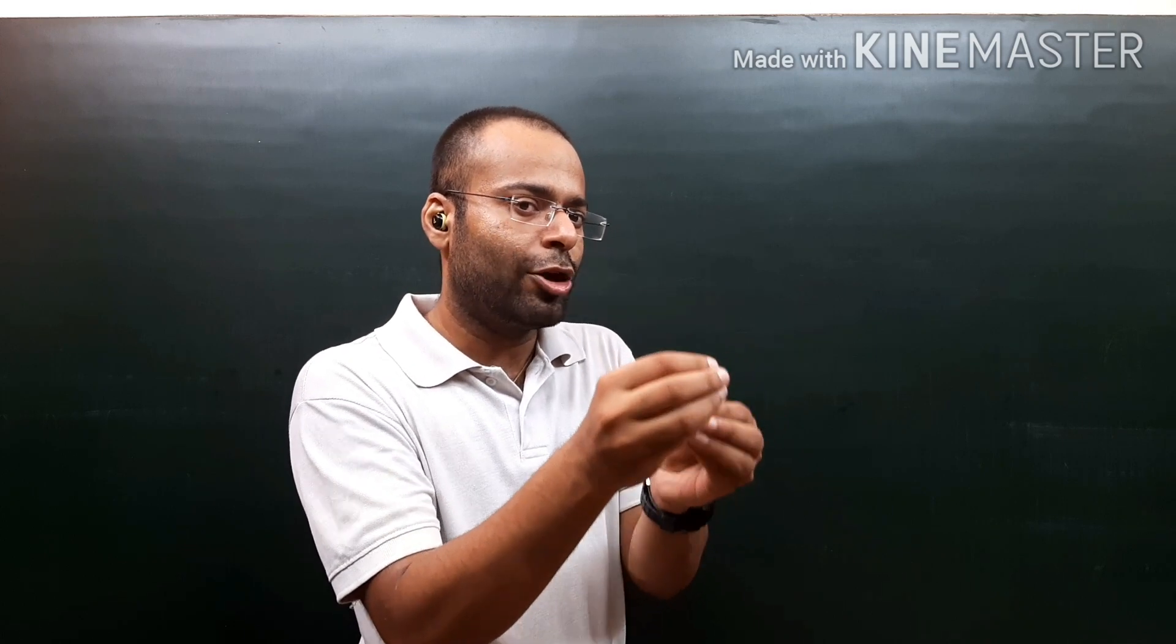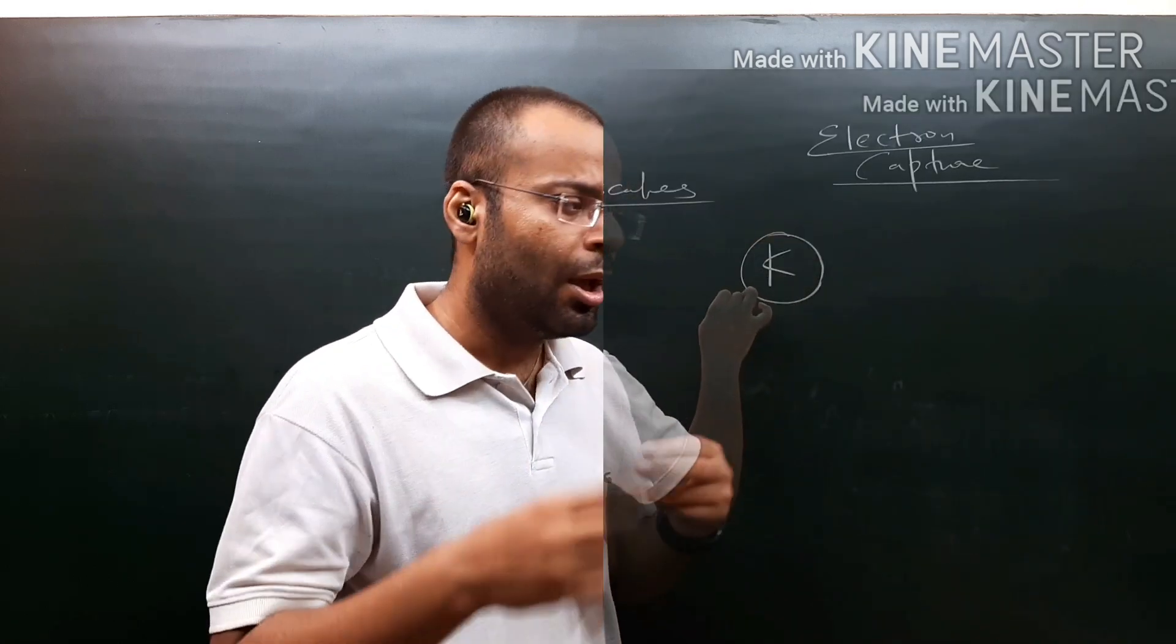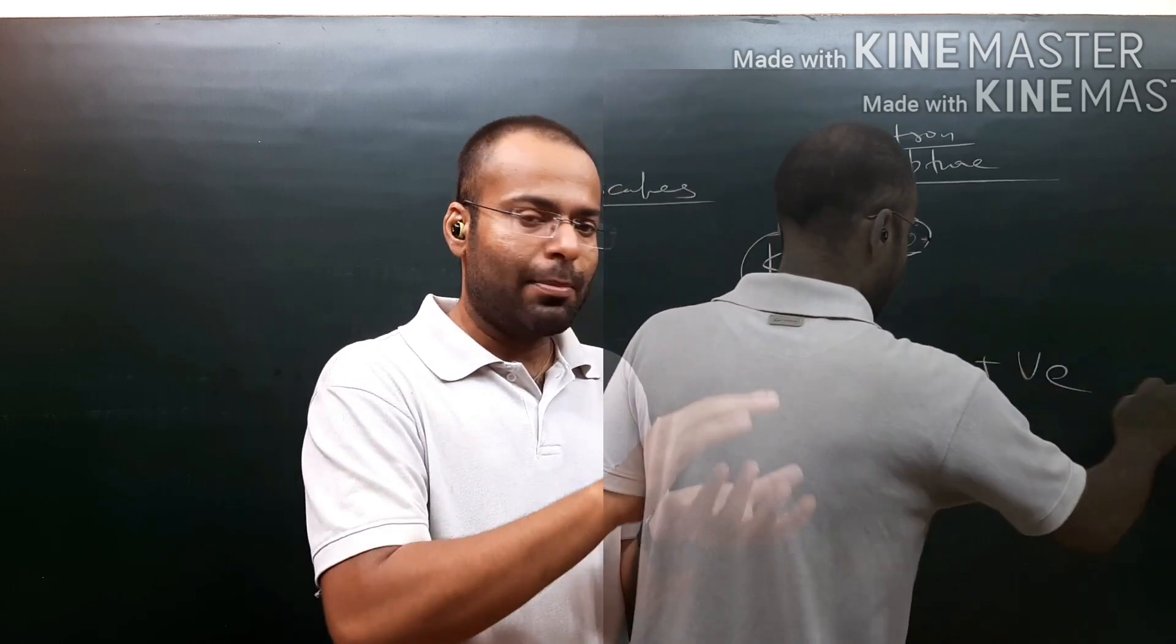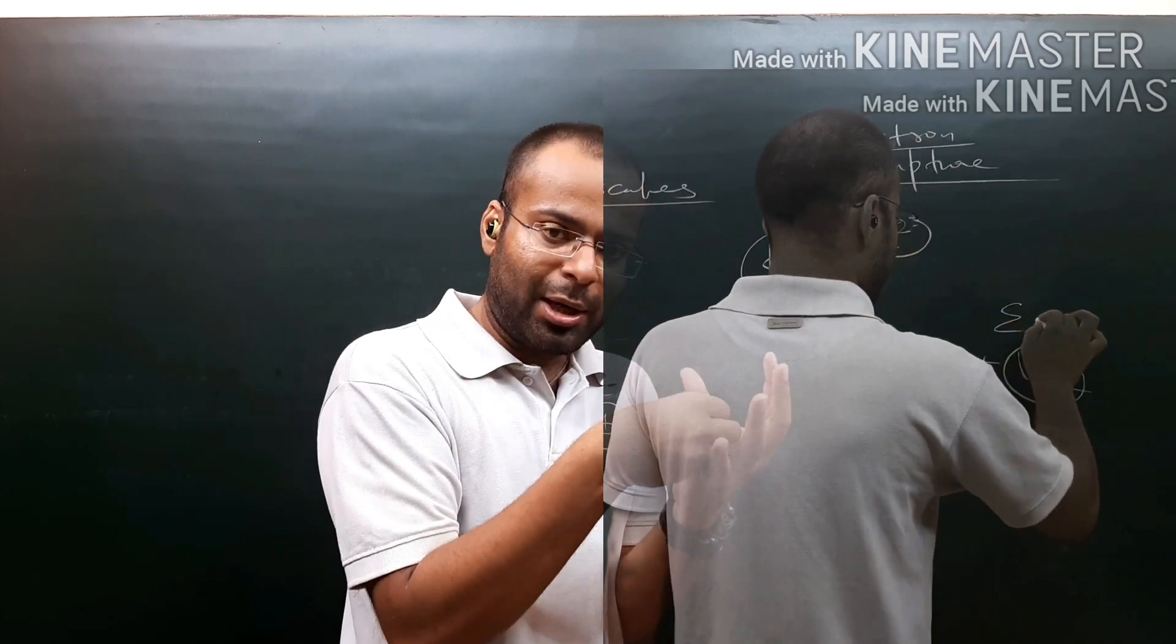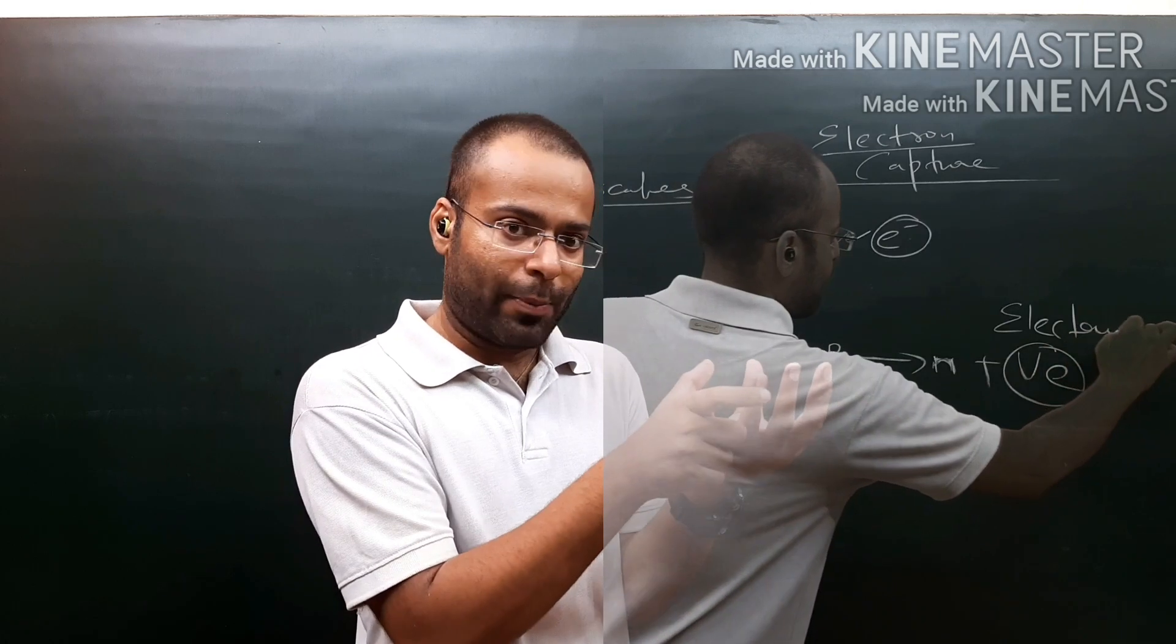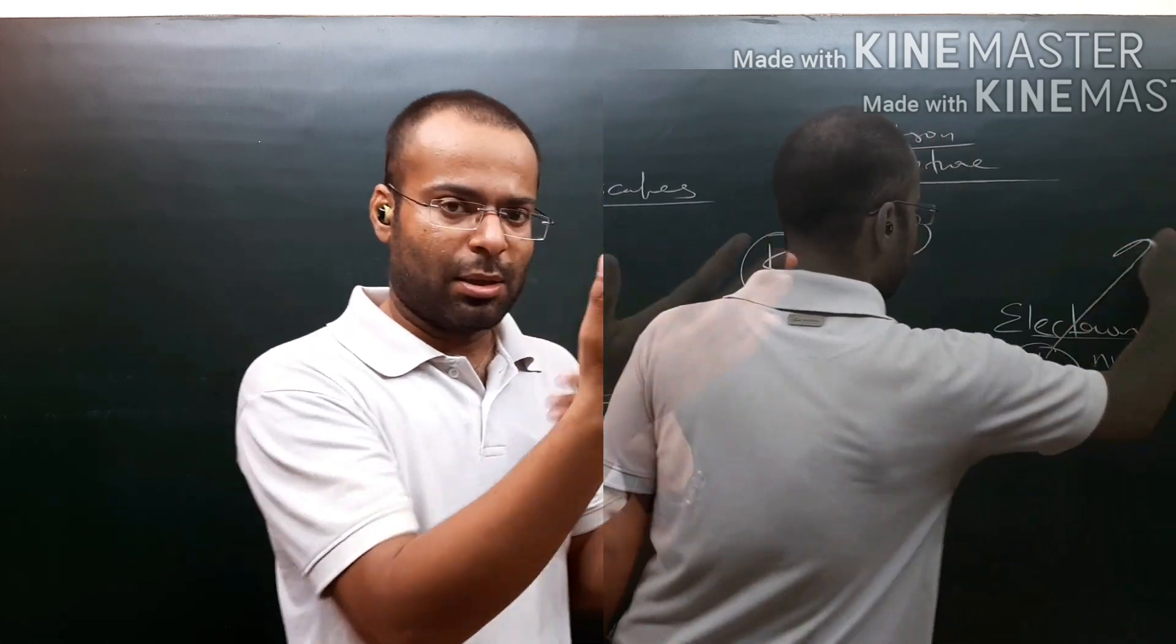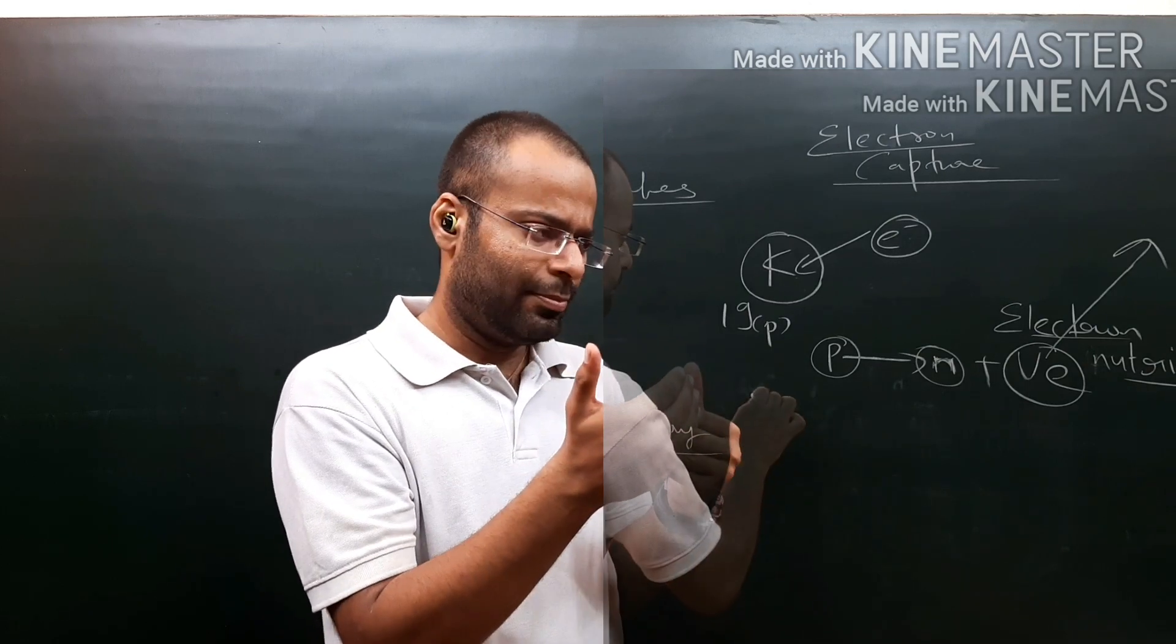When time passes, the solid rock has formed and slowly, gradually, this potassium-40 will convert into argon-40 by electron capture. In electron capture, the atom takes an electron and uses it to convert a proton into a neutron. So atomic number decreases but atomic mass remains the same. Potassium-19 becomes argon-18 because one proton has converted into a neutron.